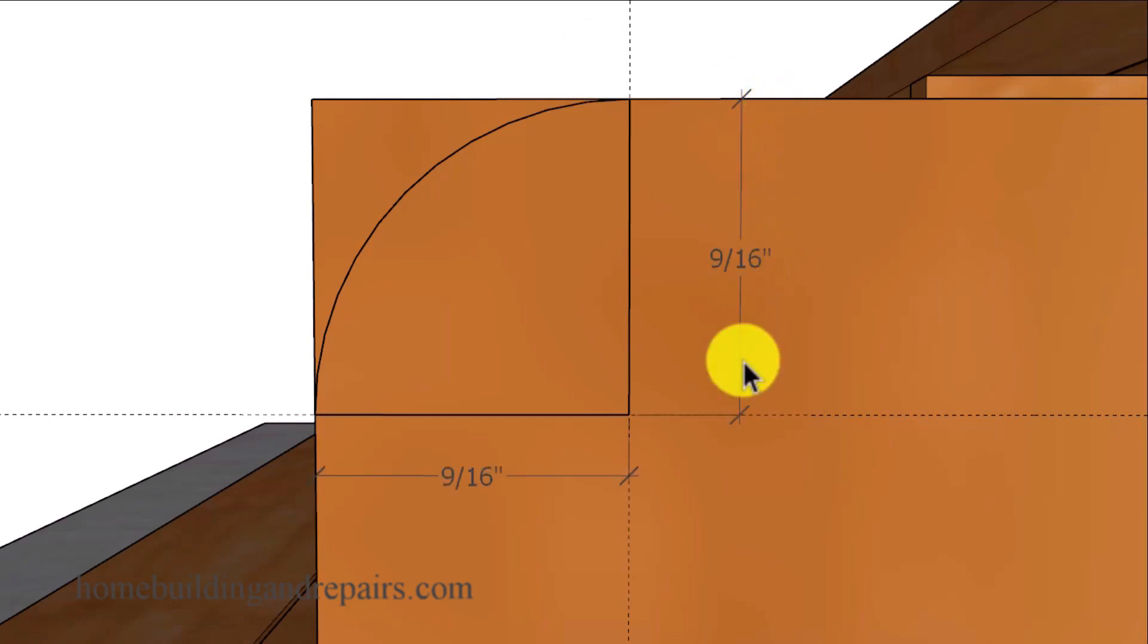Now the building code refers to a 9/16 of an inch maximum radius. The radius would be the measurement from the center of a circle to the edge of the circle or the perimeter of the circle and would look something like this. This is the maximum. It can be smaller, it cannot be larger.